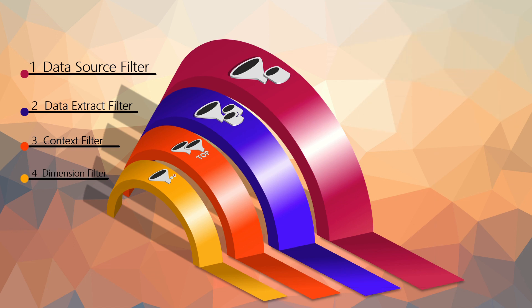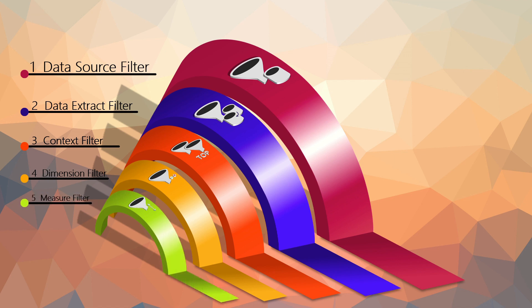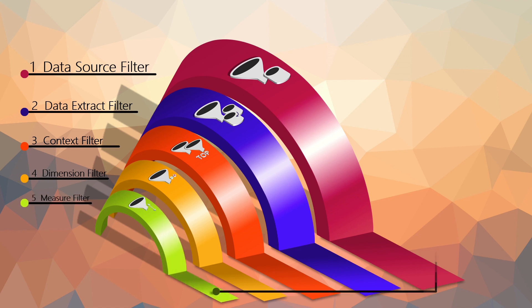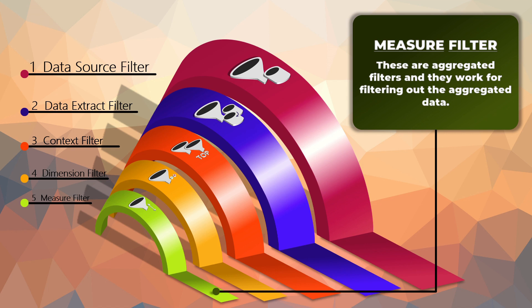The next filter we have is the aggregated filter, or we can call it the measure filter. As its name suggests, this filter works on measure types of attributes in Tableau. This filter works in the form of sliders as the values are numerical in nature. Remember, context filter, dimension filter, and measure filters are all applied on the data visualization panel.